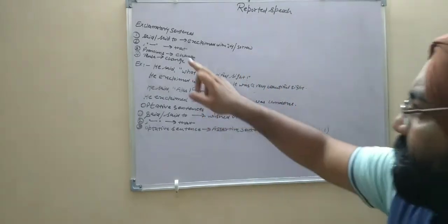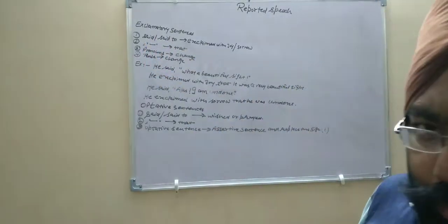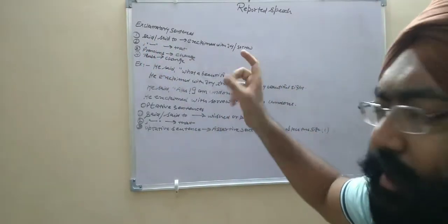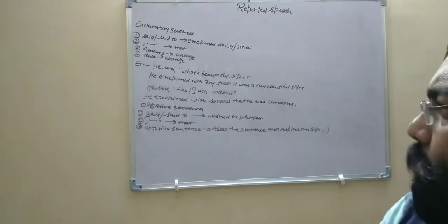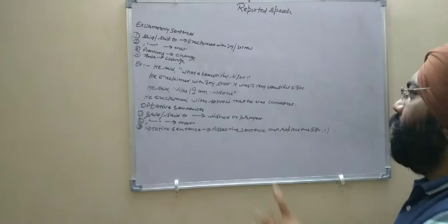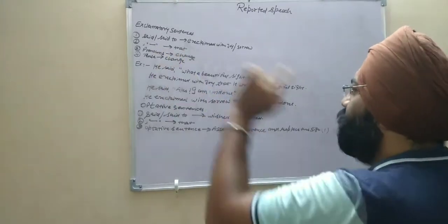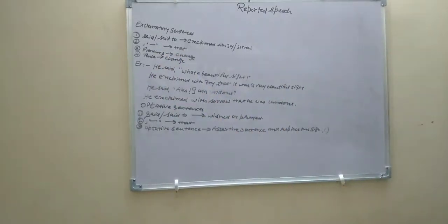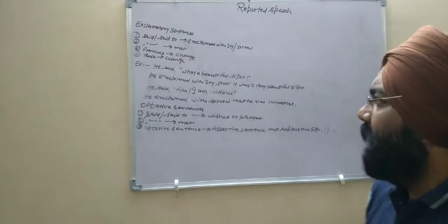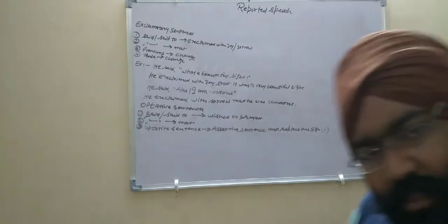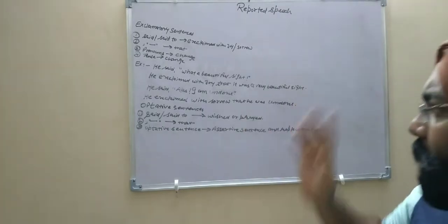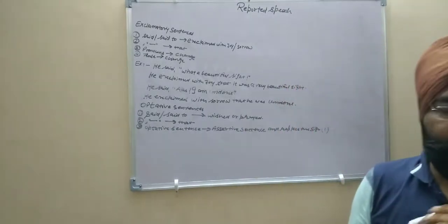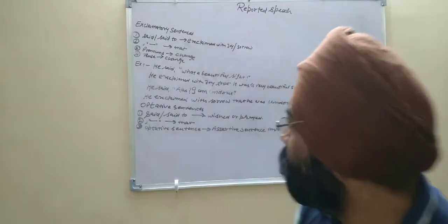Exclamatory sentences, said and said to, change into exclaimed with joy or sorrow. It depends on the mood of sentence. For comma and inverted comma we will use that. Pronouns will be changed according to the requirement. Tense also will be changed.